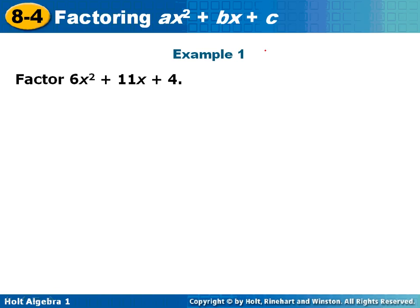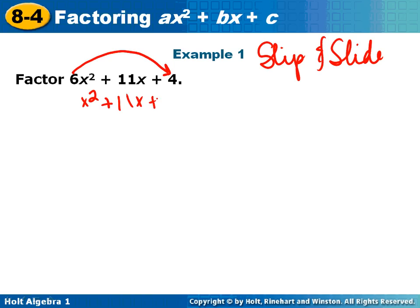This method is called slip and slide. When there's a number in front, what you are going to do is slip that number over to the 4 and rewrite your problem. x squared plus 11x plus multiply, you get 24. At this point, you're doing the method that I taught you last night. I need two things that multiply to give me 24 and add to give me 11.